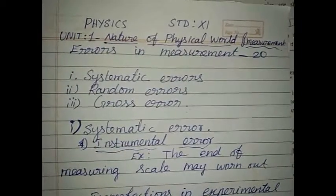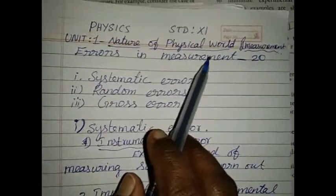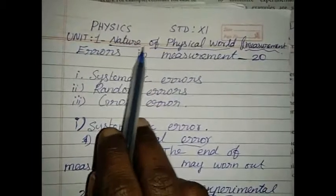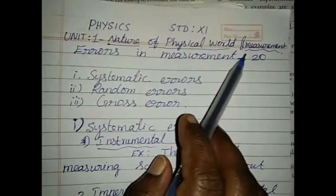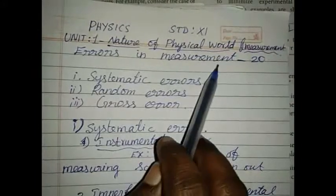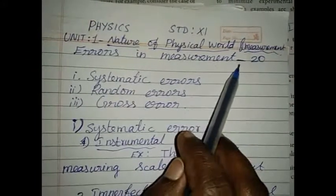Dear students, now we are going to learn 11th Standard Physics, 1st Unit, Nature of Physical World and Measurement. The topic is Errors in Measurement. This one is given in page number 20.